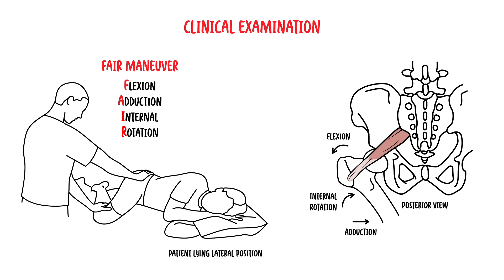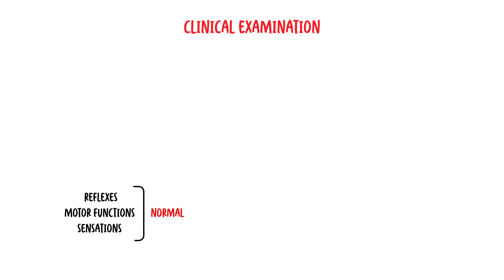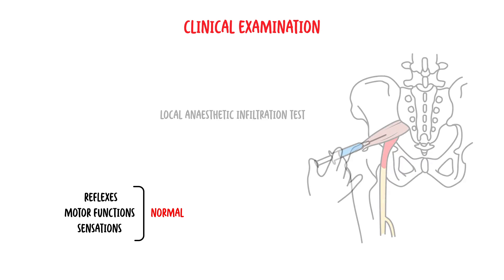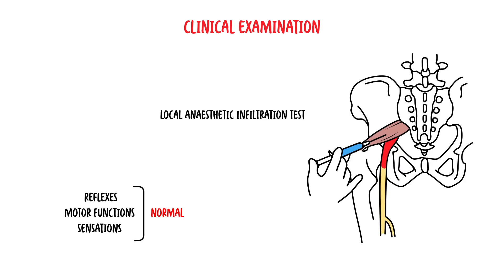With the patient lying, the examiner passively flexes, adducts, and internally rotates the hip, stretching the piriformis muscle, which can then aggravate the pain. Reflexes, motor function, and sensation are usually normal. There is another test called the local anesthetic infiltration test — when you inject local anesthetic into the piriformis region, if the pain disappears, the test is positive.